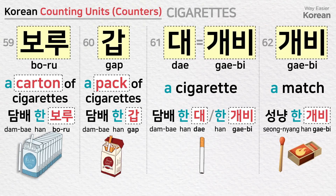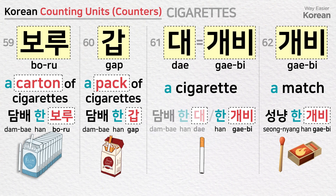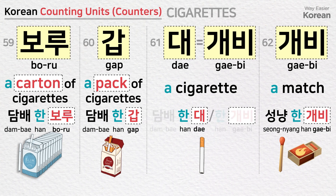보루 is a counting unit for cartons of cigarettes: a carton of cigarettes — 담배 한 보루. 갑 is a counting unit for packs of cigarettes: a pack of cigarettes — 담배 한 갑. 대 and 개비 are both used for a single cigarette: 담배 한 대 / 담배 한 개비. 개비 is also a counting unit for matches: a match — 성냥 한 개비.